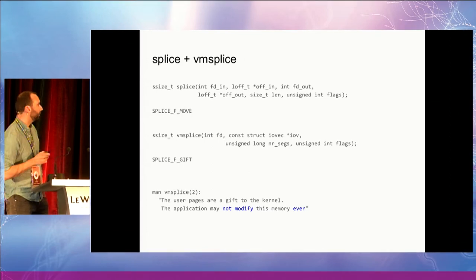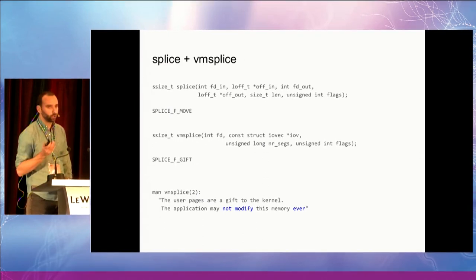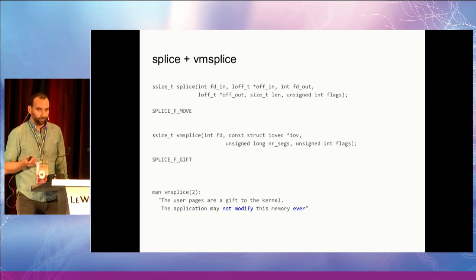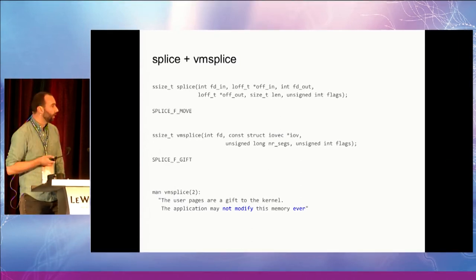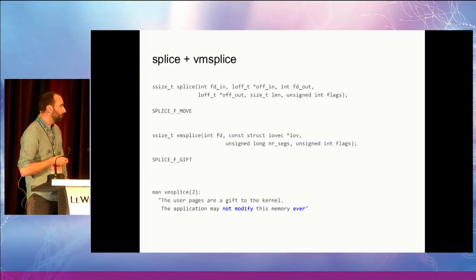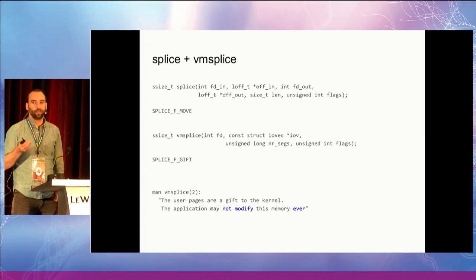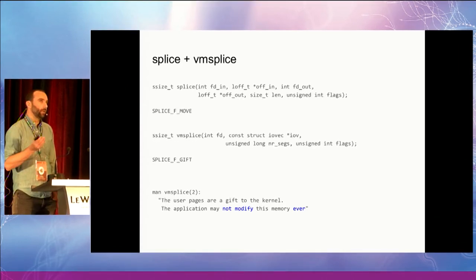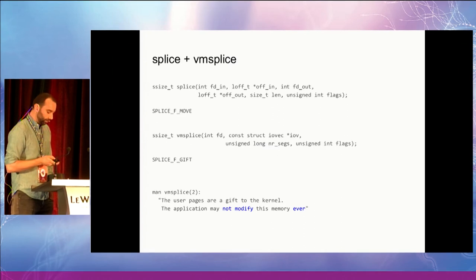The man page for VM splice is explicit: you're not allowed to modify the page ever again. This is quite a constraint. There are some bad workarounds suggested online — for instance, checking when the TCP queue is empty with SIOCOUTQ. But that is not safe, because an empty queue does not mean the packet has left the machine. It is also possible to unmap the page, which is okay, but you can't do that if you use malloc for your data. It requires significant changes to legacy applications to use this interface.